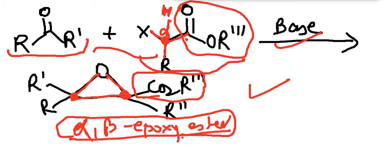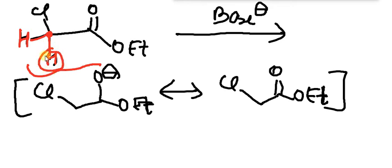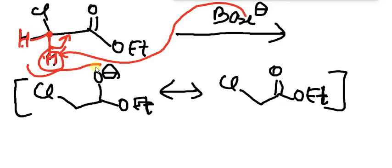Now let's understand the mechanism. In the first part of the mechanism, we take the alpha-haloester. The base acts on the most acidic hydrogen atom present in this compound — the alpha-hydrogen atoms are the most acidic. The base removes one alpha-hydrogen atom, breaking that C–H bond and forming a carbanion or enolate. This is a simple acid-base reaction. The result is bond breaking at the alpha-carbon and negative charge development, with formation of a resonance-stabilized anion.